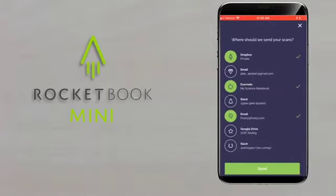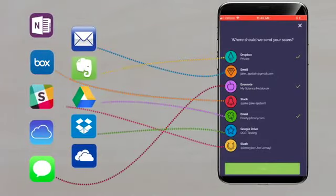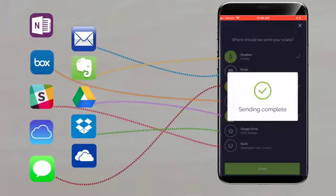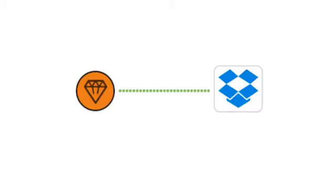Inside the Rocketbook app, there are seven configurable destinations. Set up the app to assign each destination to a location within Dropbox, Google Docs, Evernote, or many other services. So you can configure your notes from the field to drop directly into a shared Google Drive, or blast your brainstorms to your ideas notebook in Evernote.